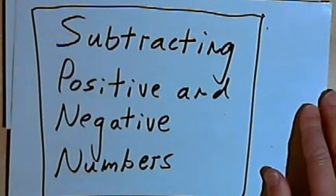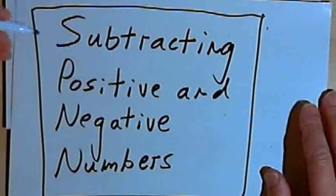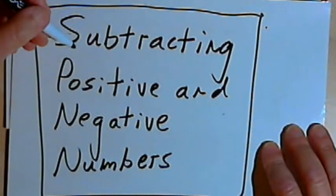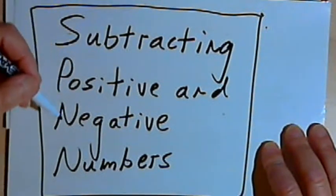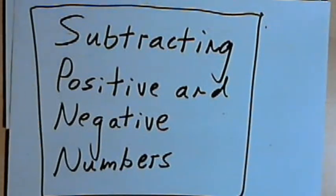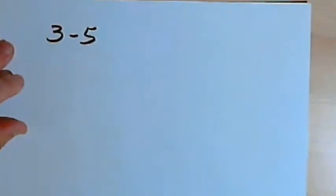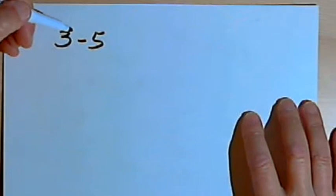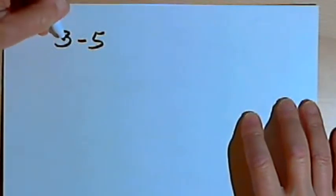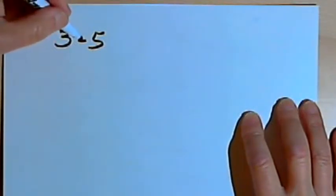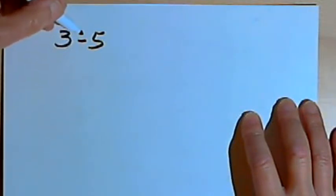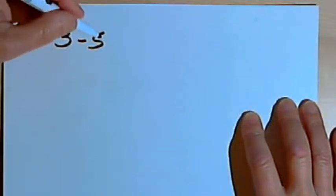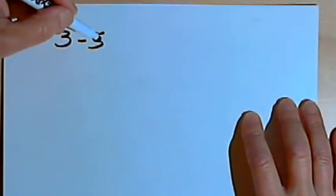This video is provided as supplementary material for courses taught at Howard Community College. In this video I'm going to talk about subtracting positive and negative numbers. What I'm going to do is turn subtraction into an addition problem. Addition is the opposite of subtraction, and positive numbers are opposites of negative numbers.